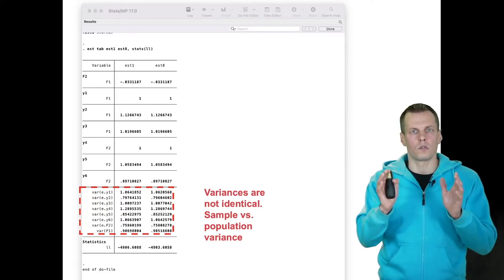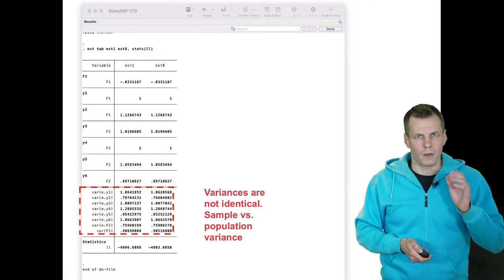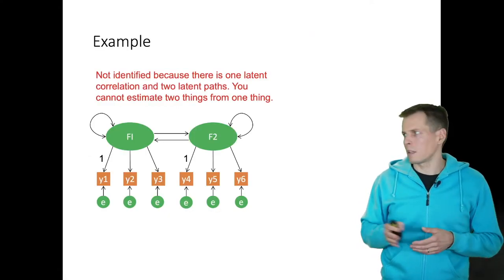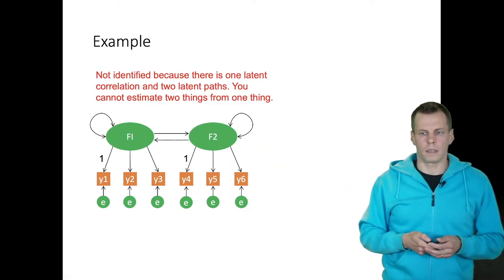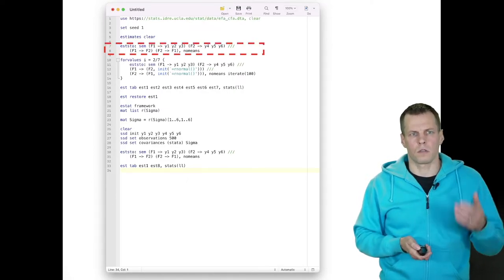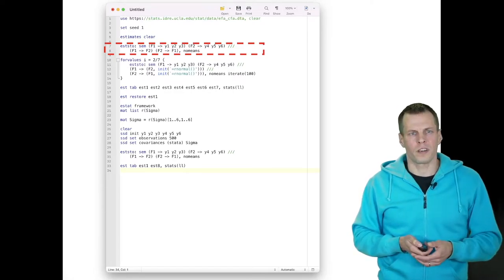Now, let's take a look at this non-identified model. So it's not identified because we can't estimate a bidirectional path from one covariance. And now we're going to work through the full set of diagnostics. So this is the first model just with our original data.